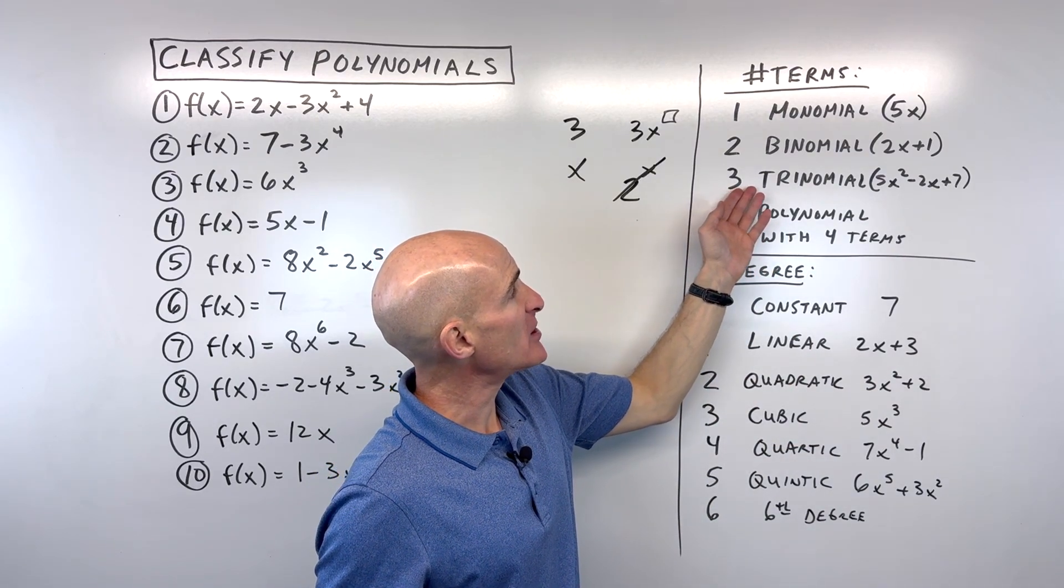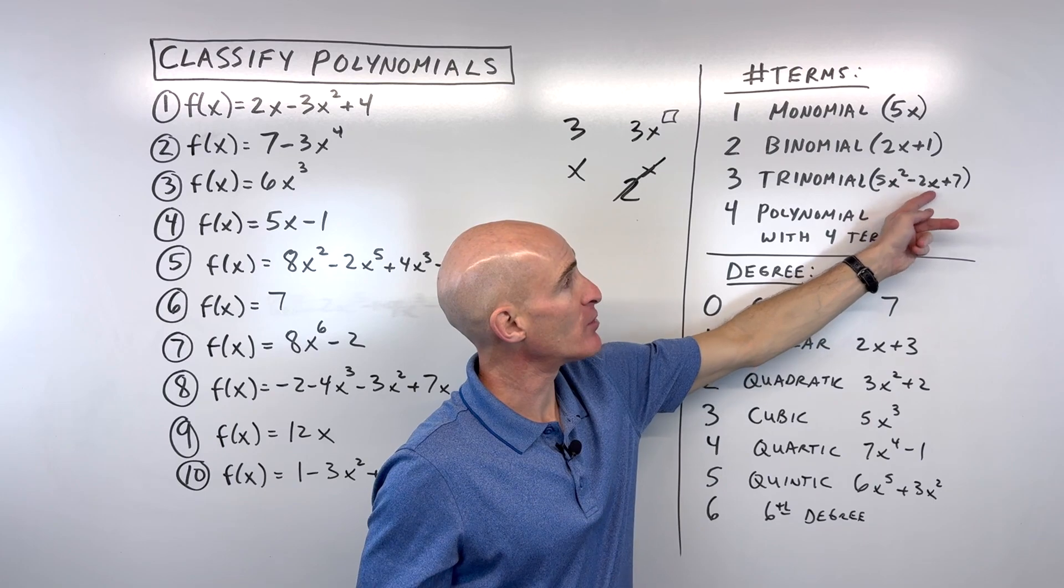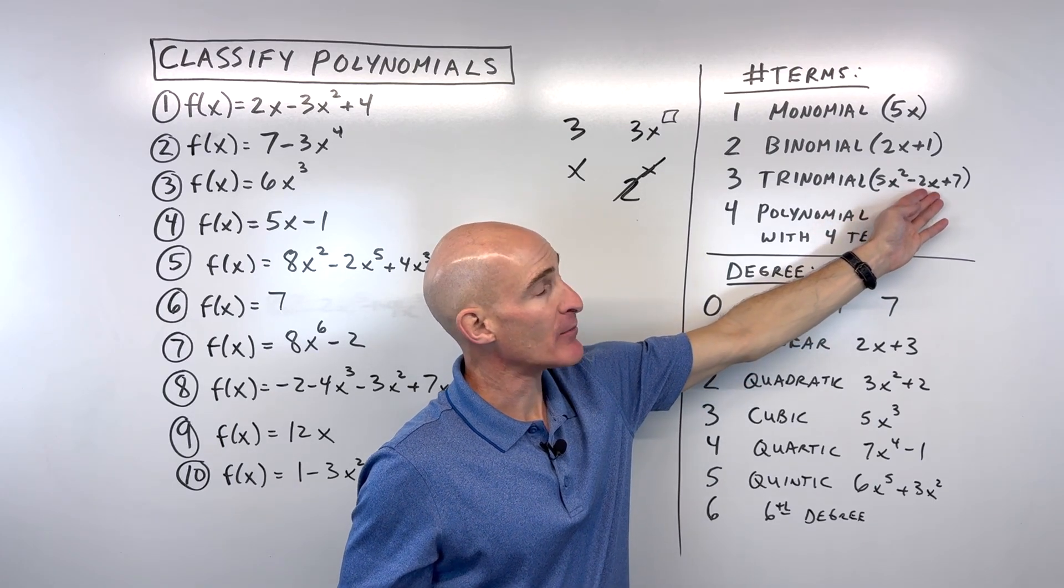A trinomial has three terms, 1, 2, 3, again, separated by a minus or plus. This would be another example of a trinomial.